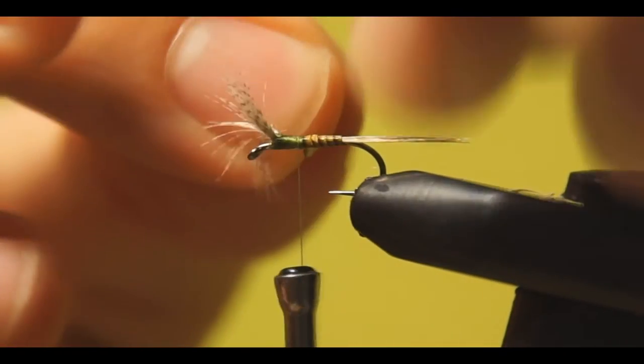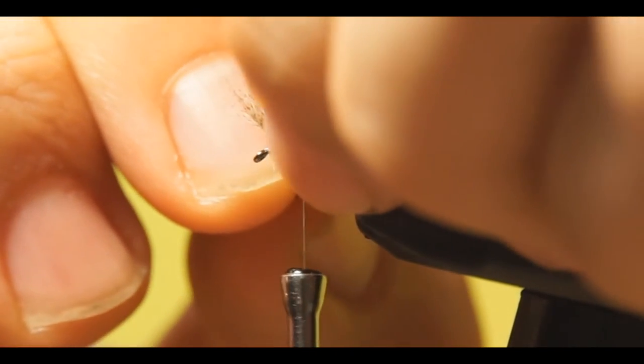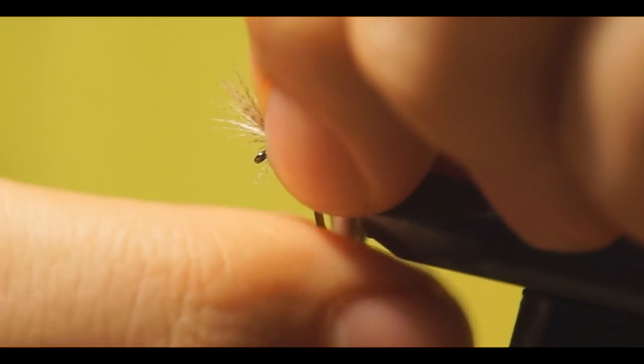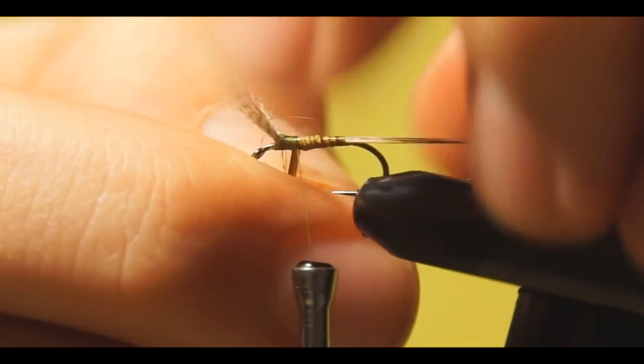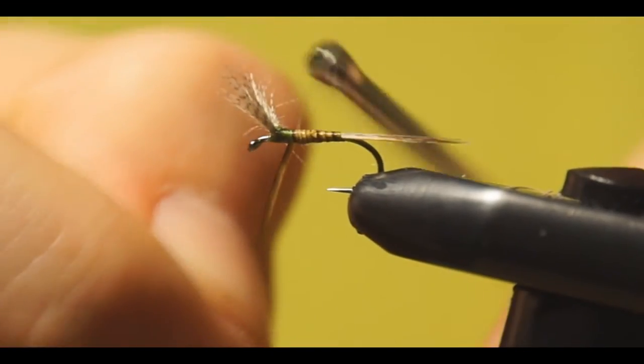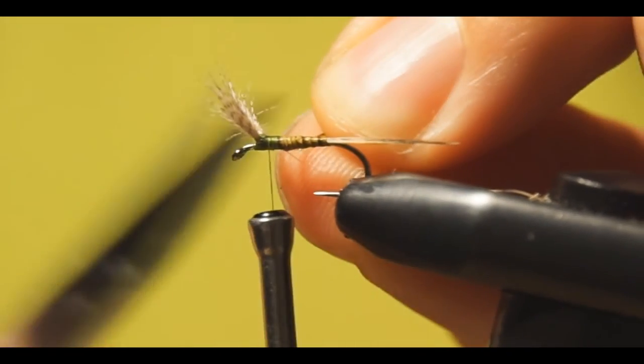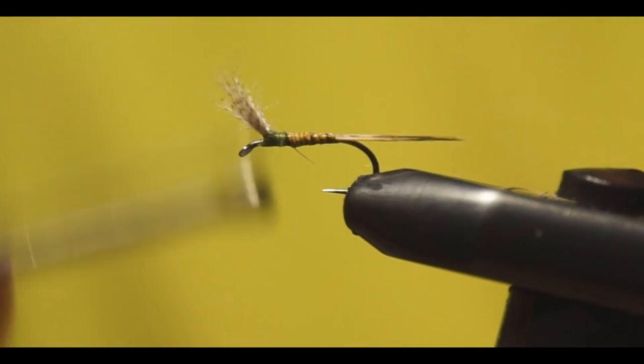You can use hackle pliers but actually I prefer to turn them around by my finger. I have the better feeling for how much I'm pulling. Stop here. Make two wraps and one in front, then you can cut this. One more wrap.